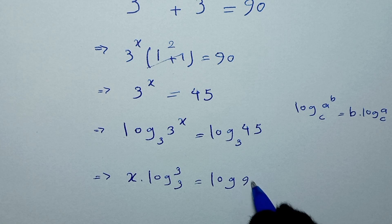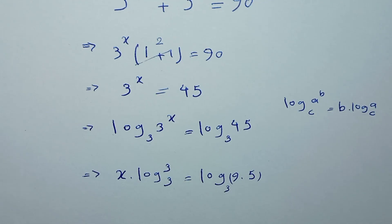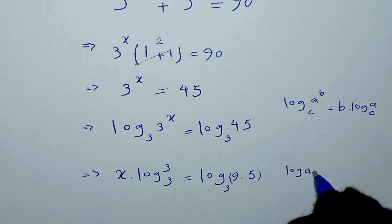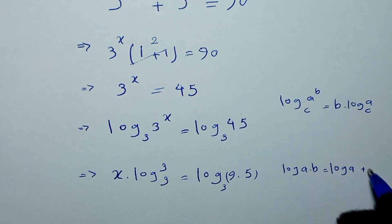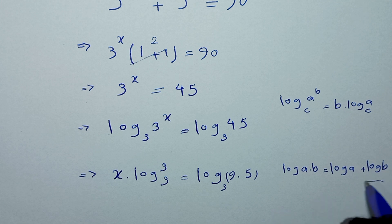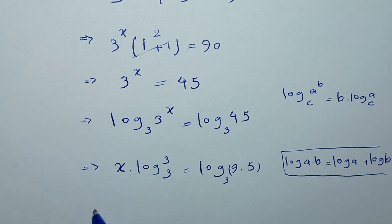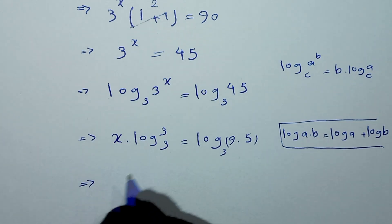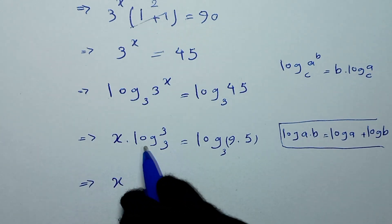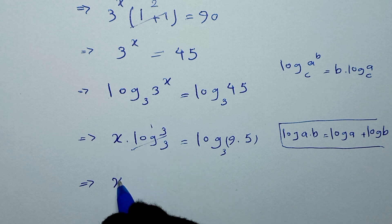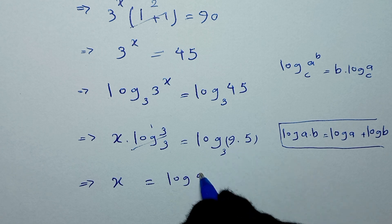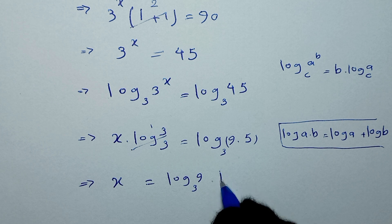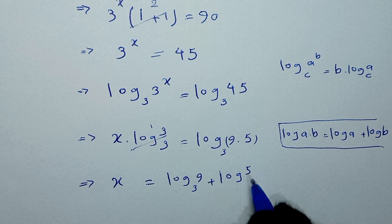Now, 45 is 9 times 5. Using the log product rule, log of a times b equals log of a plus log of b. So x times log of 3 to base 3 — which is 1 — gives us x is equal to log of 9 times 5, which we write as log of 9 to base 3 plus log of 5 to base 3.